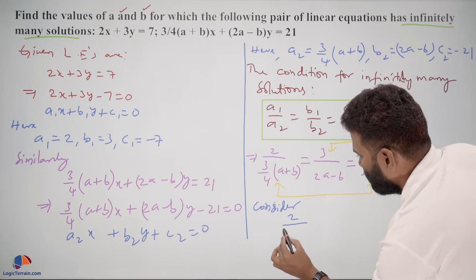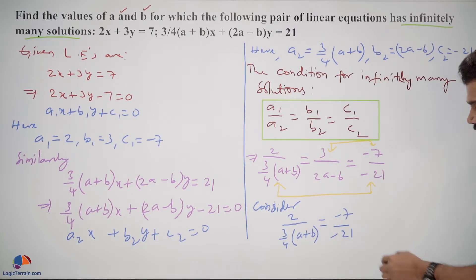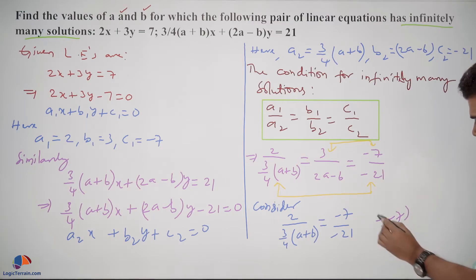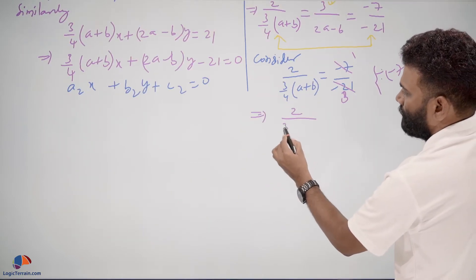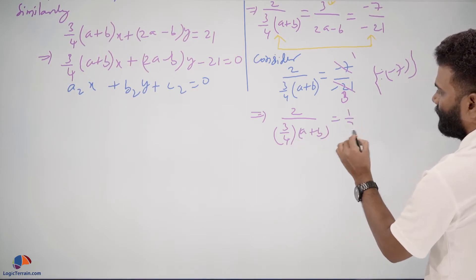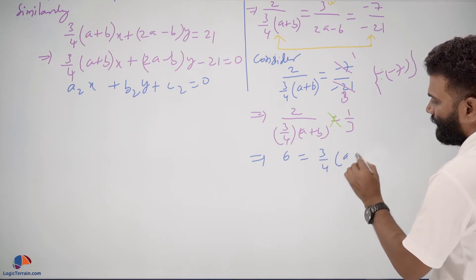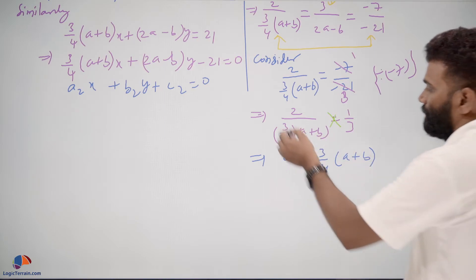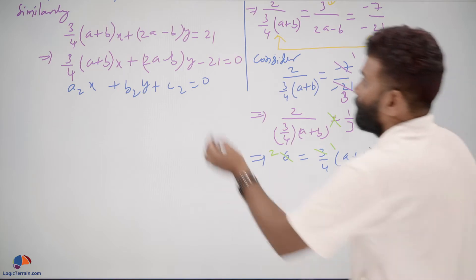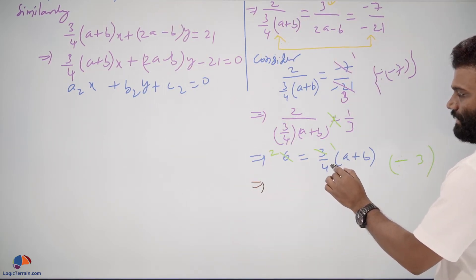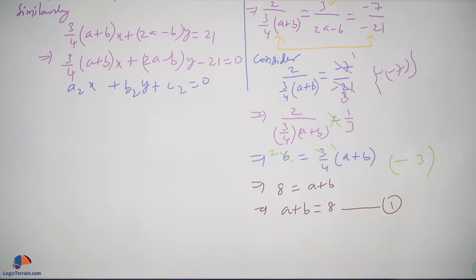Consider 2 upon three-quarters (A plus B) equals negative 7 upon negative 21. Dividing numerator and denominator by negative 7 on the right side gives 1 upon 3. So 2 upon three-quarters (A plus B) equals 1 upon 3. Cross multiplying: 6 equals three-quarters (A plus B). Dividing both sides by 3 and multiplying across by 4 gives A plus B equals 8. This is equation number 1.